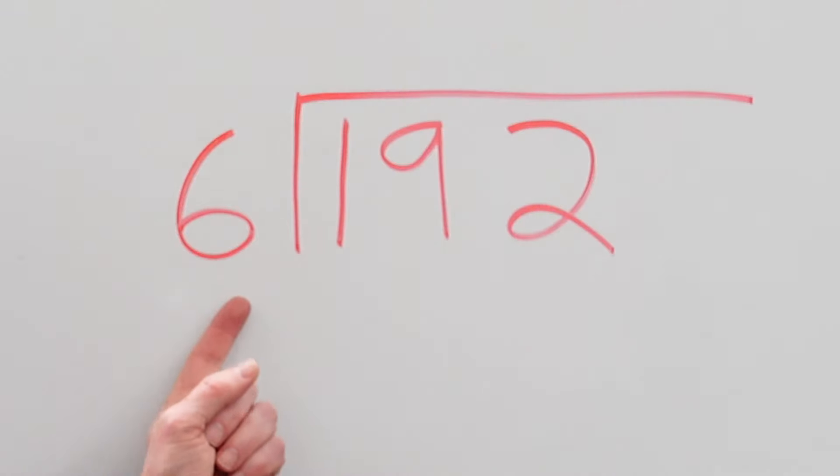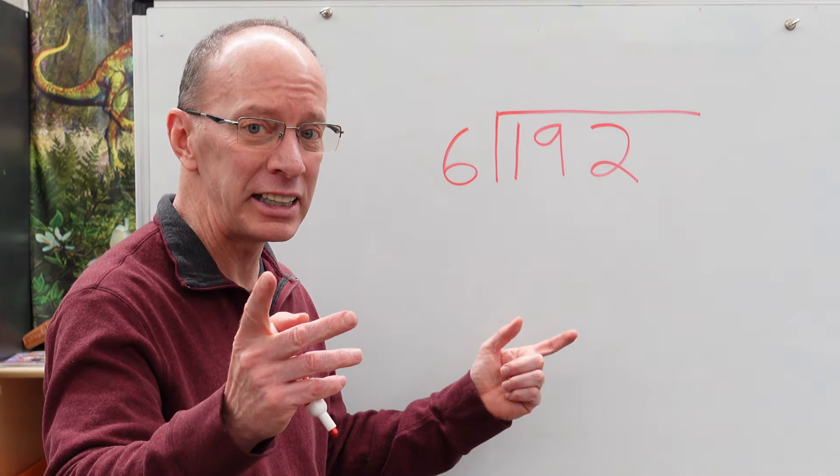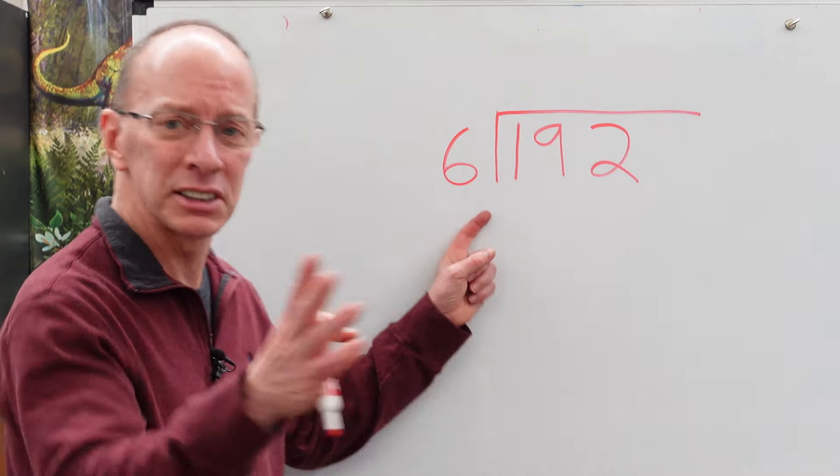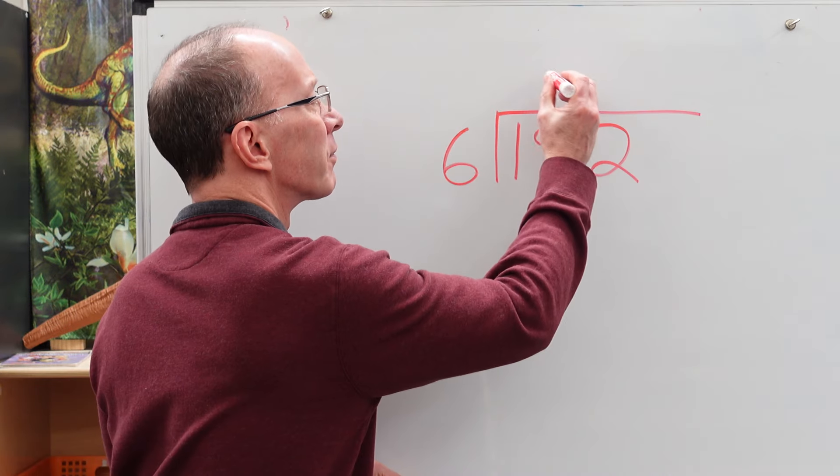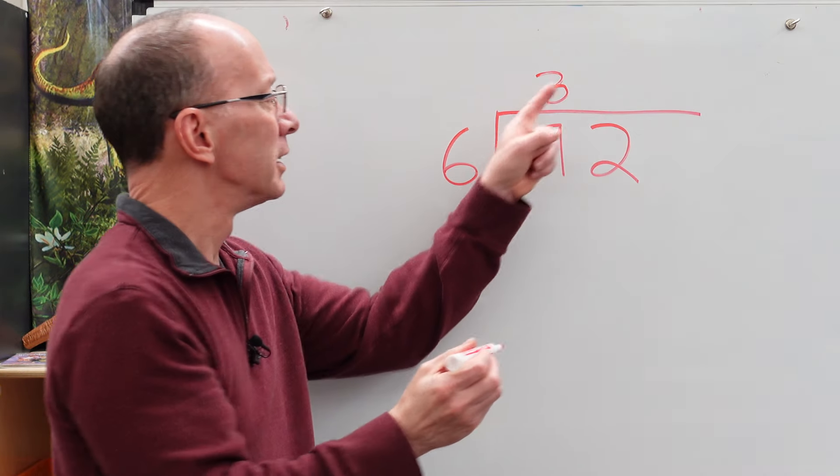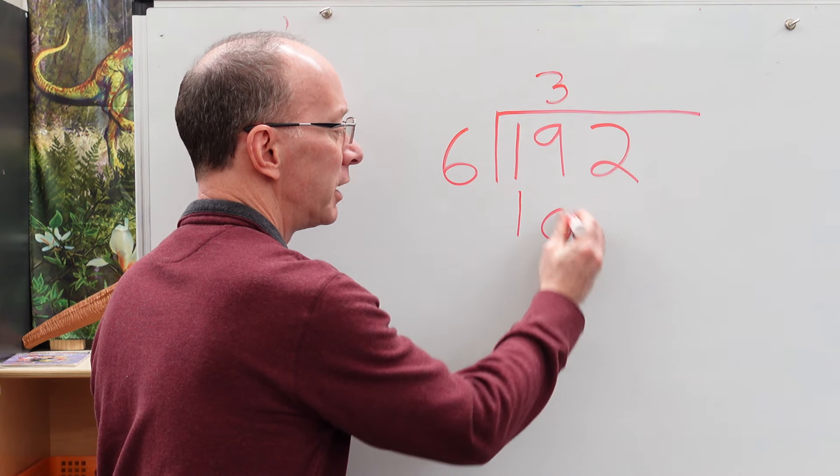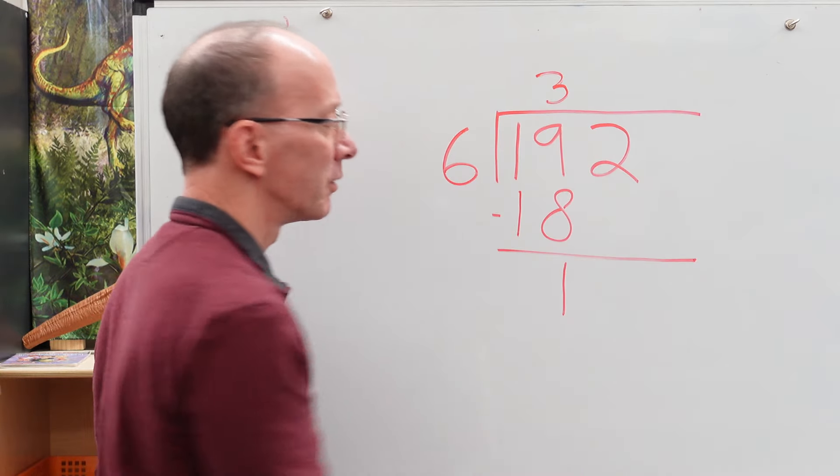All right. First of all, we need to figure out how many times can I put six into 19? Six times two is 12. Six times three is 18. Six times four, 24. No, don't go off the door. Bring it down. Bring it down. Stick with six times three. All right. So we put the three right above here. Three times six is 18. Put the 18 right here. Subtract it. Bring the one down.